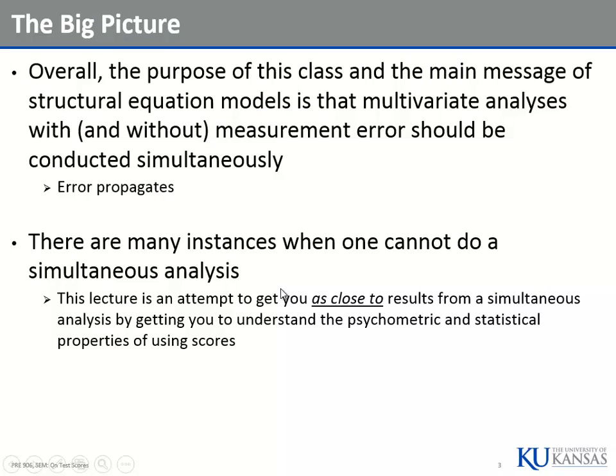Big picture: the purpose of this class and the main message of structural equation models. You may think it's estimation, matrix algebra, RMSEA, CFA, or something like that. But the big picture is that multivariate analyses with and without measurement error, when done simultaneously, give you more accurate results. It's all about multivariate analyses done simultaneously. The reason is that error in each step of an analysis will propagate — if you take results with error from one analysis and put them into another while forgetting the error, you're more prone to make bigger mistakes.